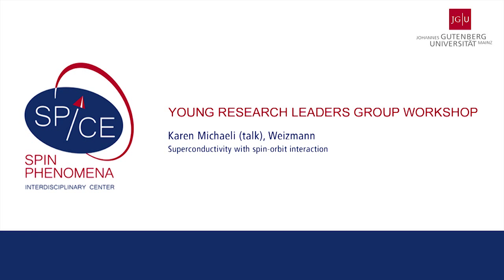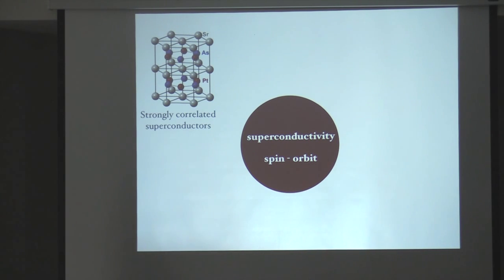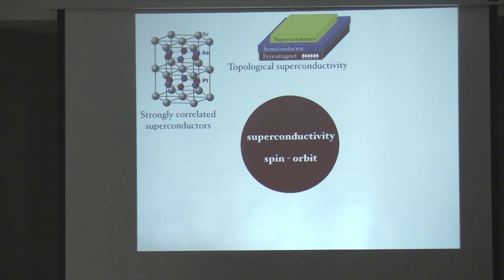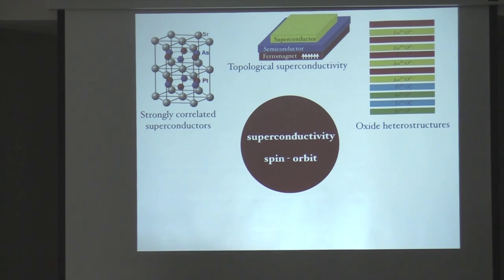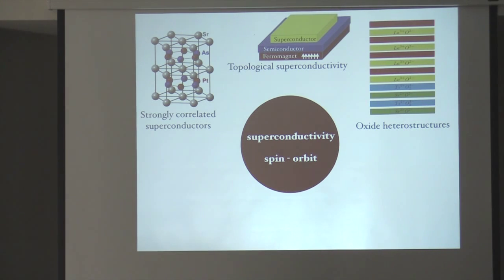Here we hear quite a lot about the interplay of superconductivity and spin-orbit coupling in quite a lot of different systems. For example, in many of the strongly correlated superconductors, it is known that the effect of spin-orbit is quite important in determining what kind of superconductivity will be in the material. We know that in the case of topological superconductivity, spin-orbit coupling is quite essential. Also, in recent developments in heterostructures and superconductivity in oxide heterostructures, it is also known to have quite strong spin-orbit coupling, and spin-orbit coupling is believed to have a very large effect on superconductivity. So altogether, there are many different effects coming from the interplay of superconductivity and spin-orbit coupling, and I'm going to concentrate on two different things.